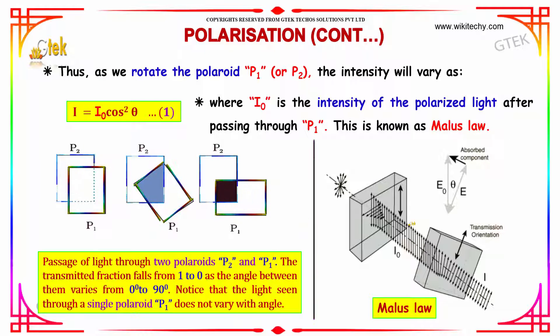As we rotate the polaroid P1 or P2, the intensity will vary, where I0 is the intensity of the polarized light after passing through P1. This is known as Malus's law. As per Malus's law, I is equal to I0 into cos square theta.